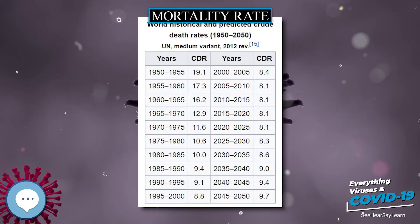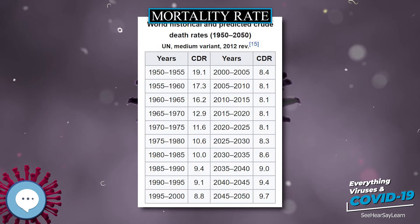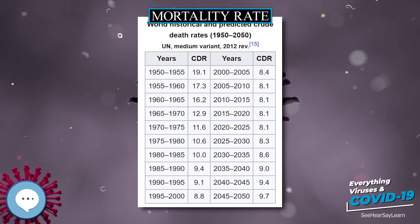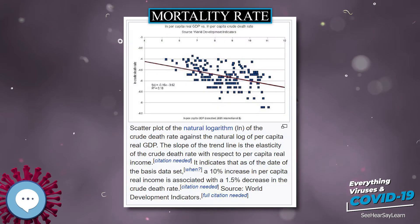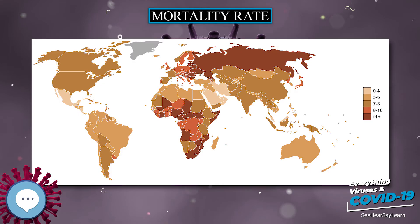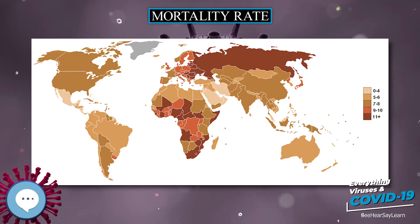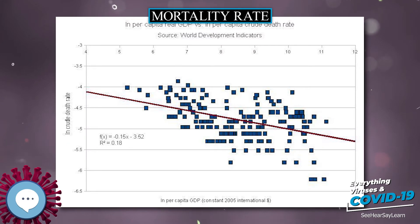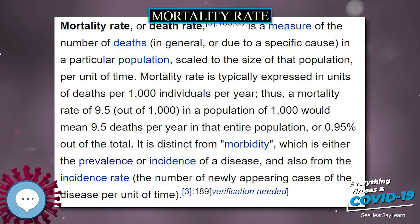It is distinct from morbidity, which is either the prevalence or incidence of a disease, and also from the incidence rate — the number of newly appearing cases of the disease per unit of time. An important specific mortality rate measure is the crude death rate, which looks at mortality from all causes in a given time interval for a given population.